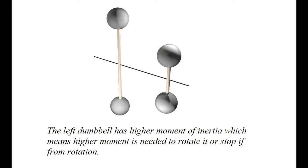We can define a mechanical property called moment of inertia. The moment of inertia is a quantity that determines the moment needed to spin a body, or to stop it from spinning. A higher moment of inertia means that more force or more moment is needed to rotate the element.